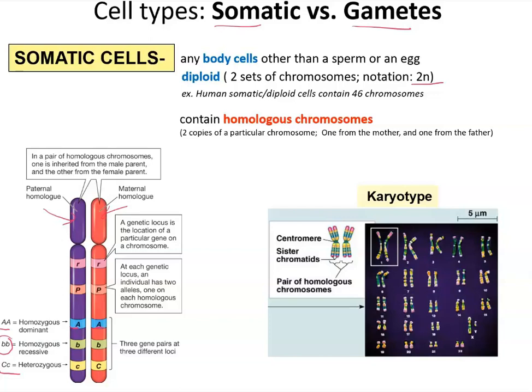With homologous chromosomes, we can put them together in pairs, stain them, count them, and produce a picture of chromosomes — we call that a karyotype. By counting and observing these chromosomes, we can detect chromosomal abnormalities and also determine the gender of a person.